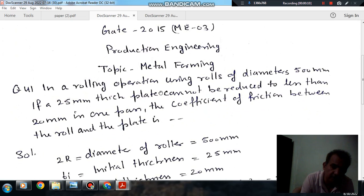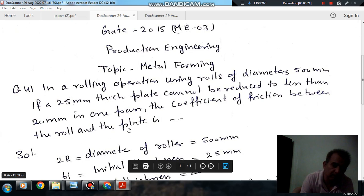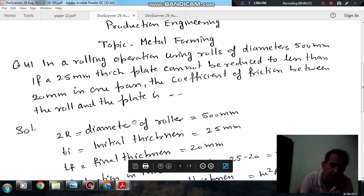In a rolling operation using rolls of diameter 500 mm, if a 25 mm thick plate cannot be reduced to less than 20 mm in one pass, we need to find the coefficient of friction between the roll and the plate.